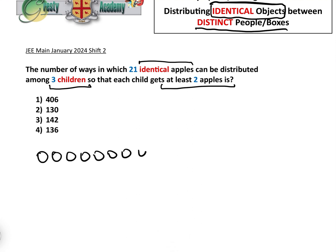1, 2, 3, 4, 5, 6, 7, 8, 9, 10, 11, 12, 13, 14, 15, 16, 17, 18, 19, 20, 21. Okay, so there's our 21 identical apples.